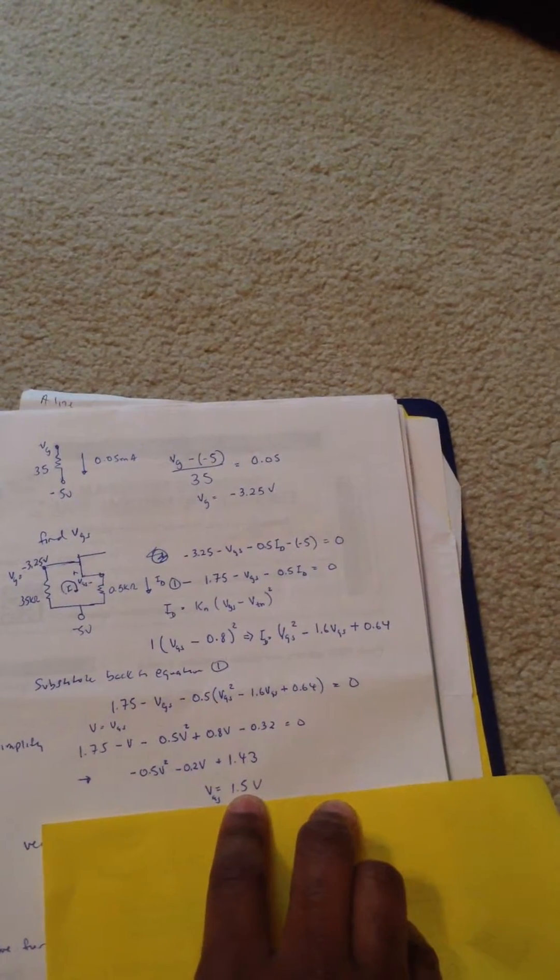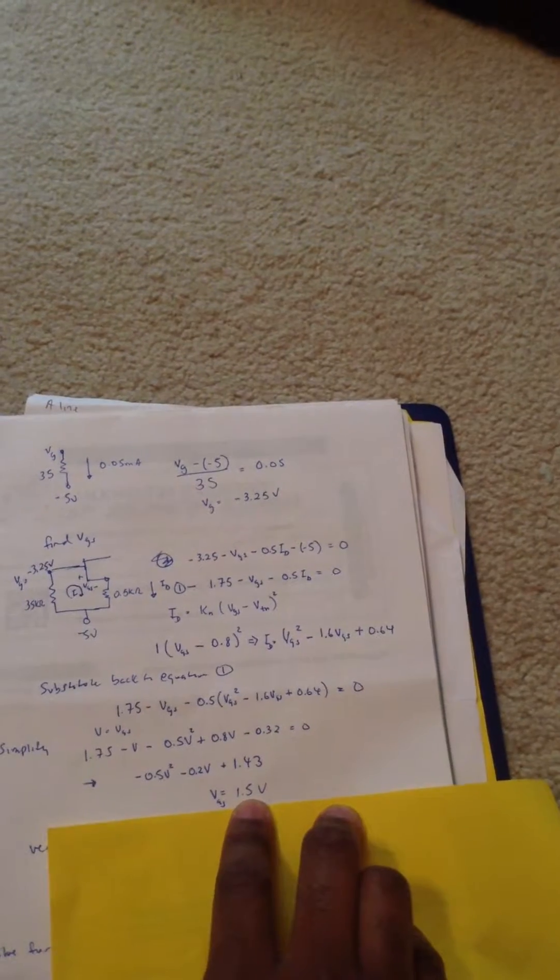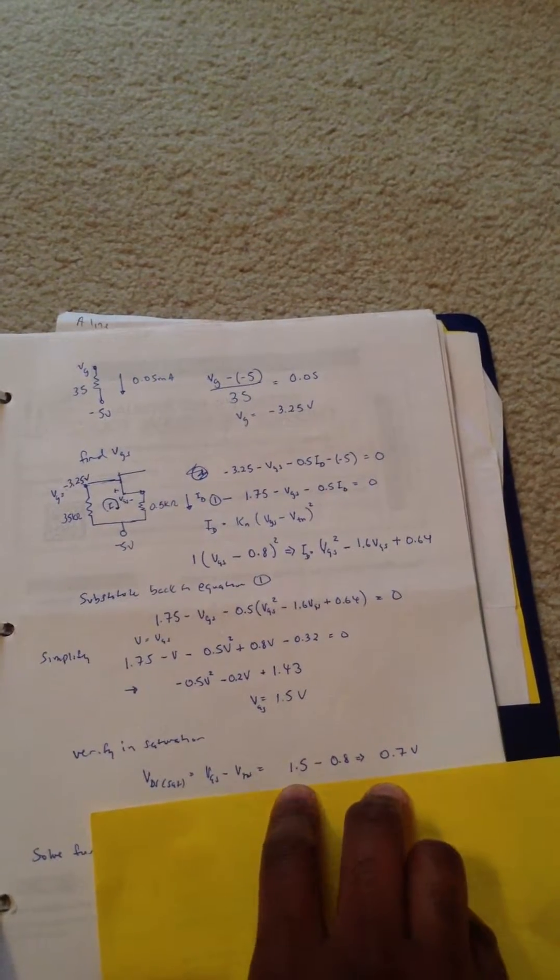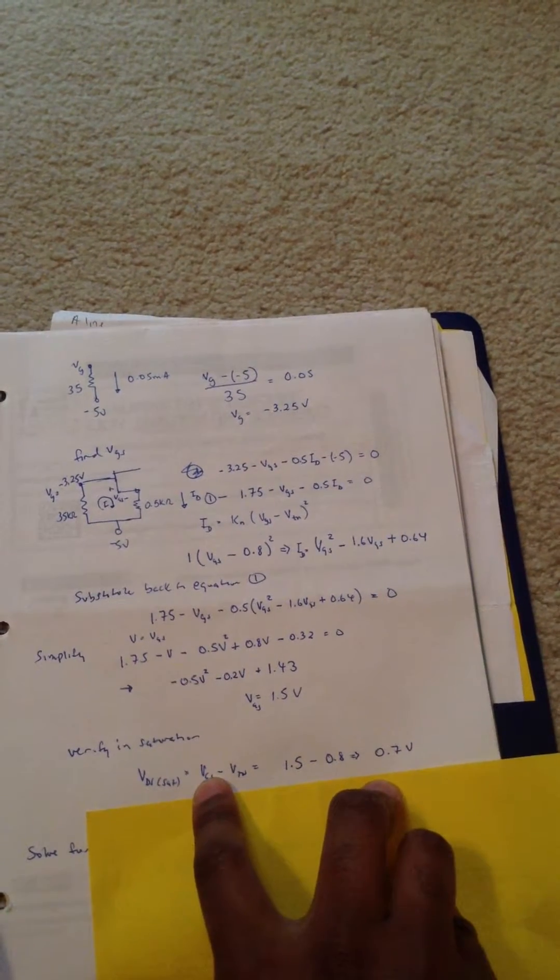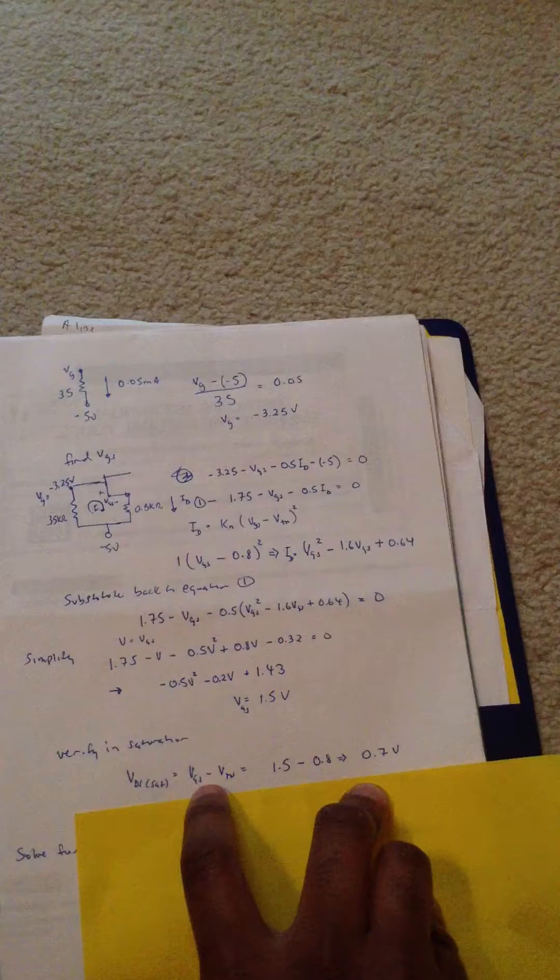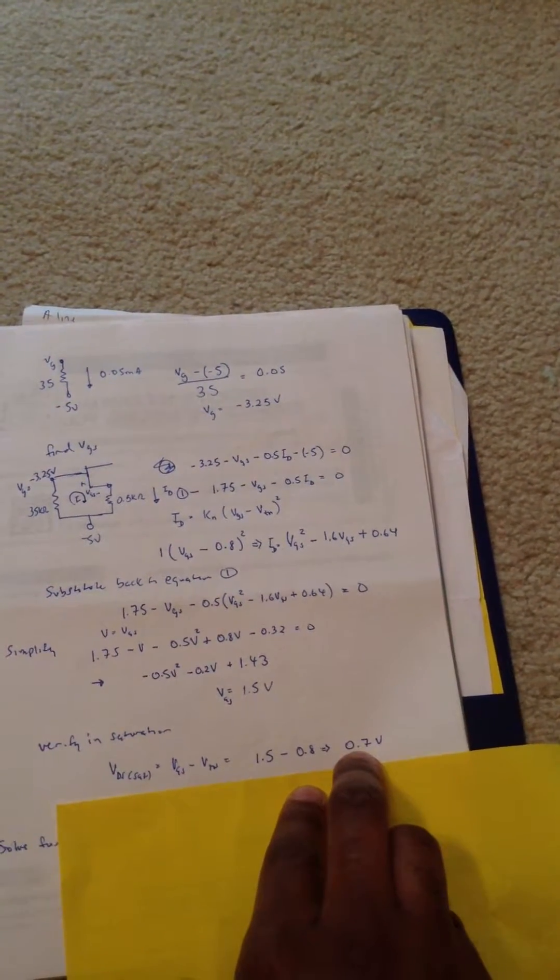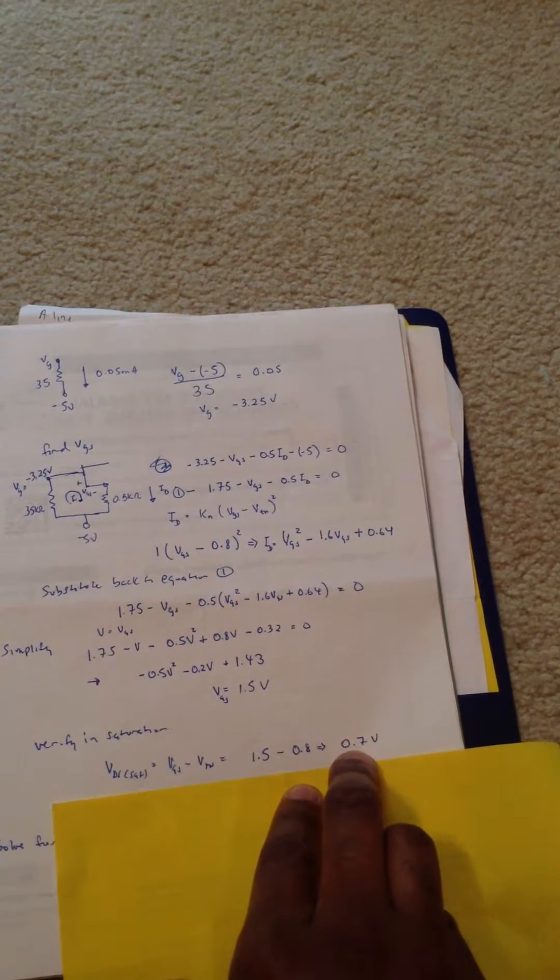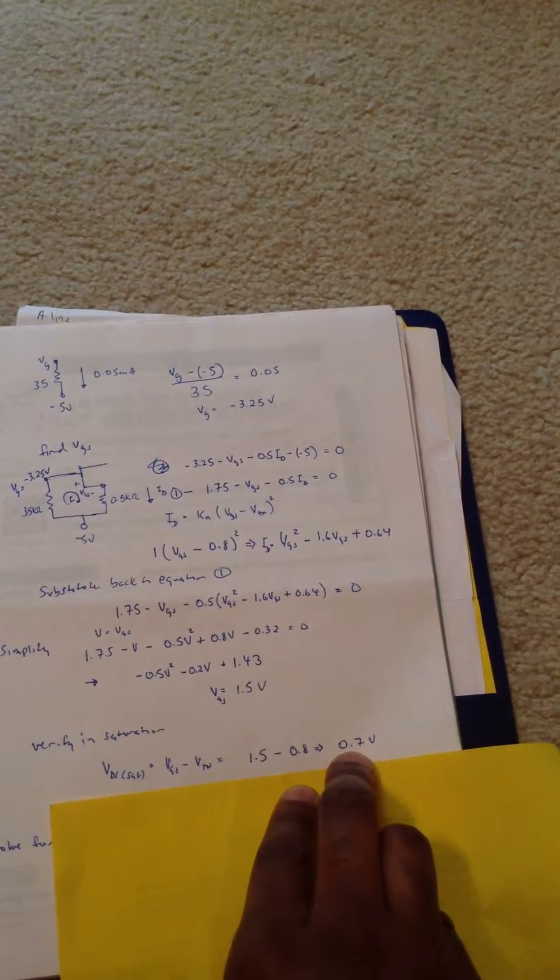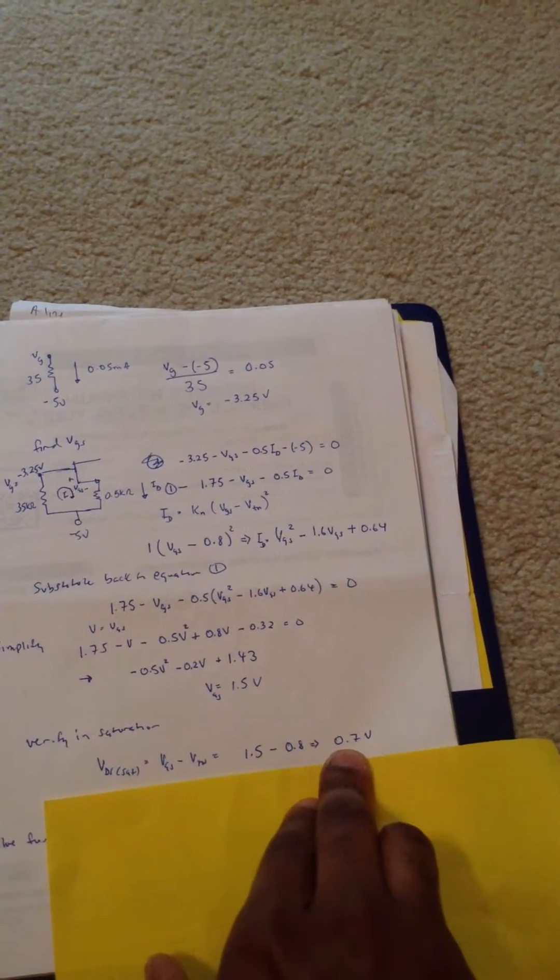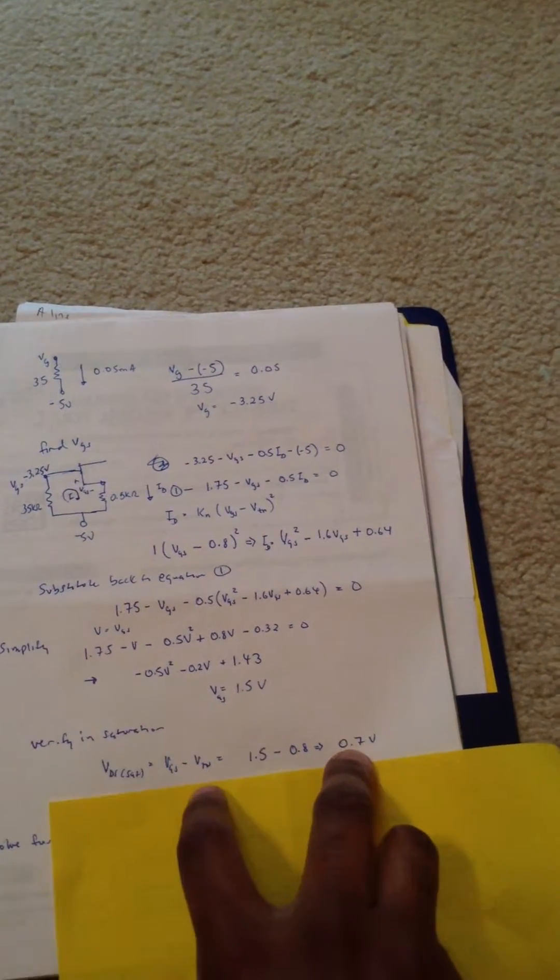we can now solve for ID. We're going to verify that it's in saturation. And to do that, you have VGS minus threshold voltage, which VDS saturation is 0.7 volts. So when we solve for VDS, VDS has to be greater than this to actually be in saturation.